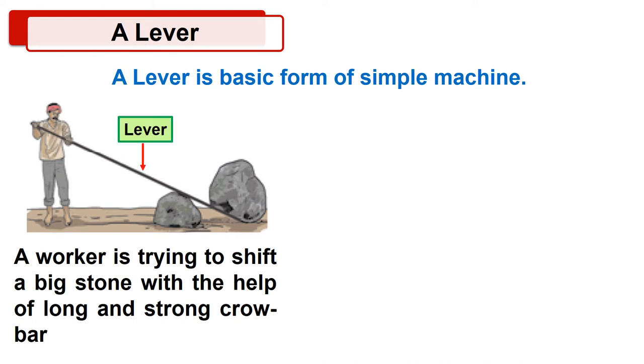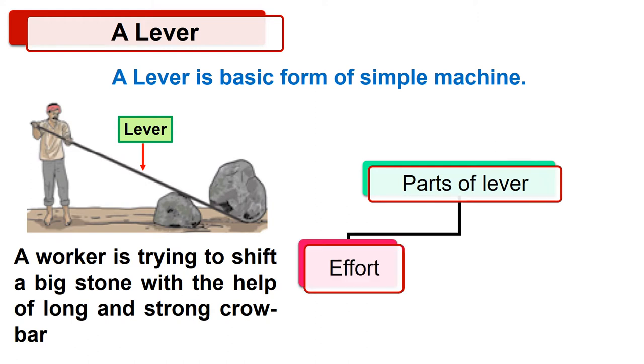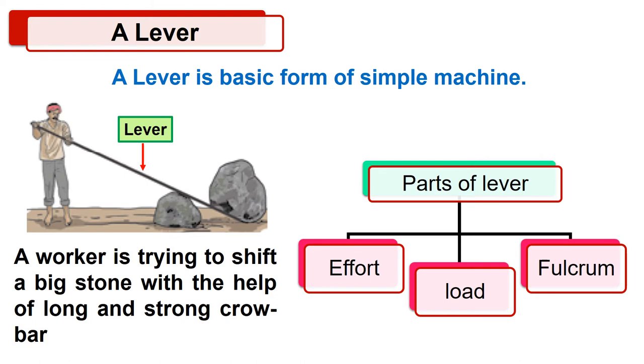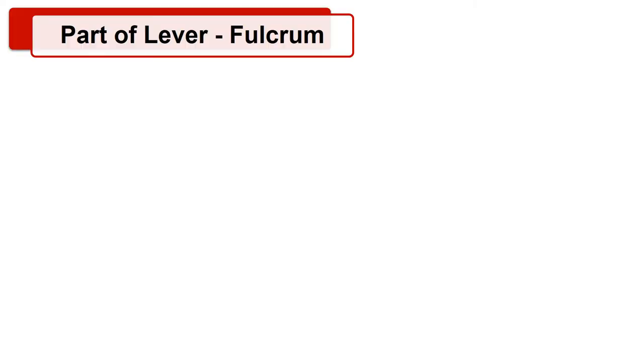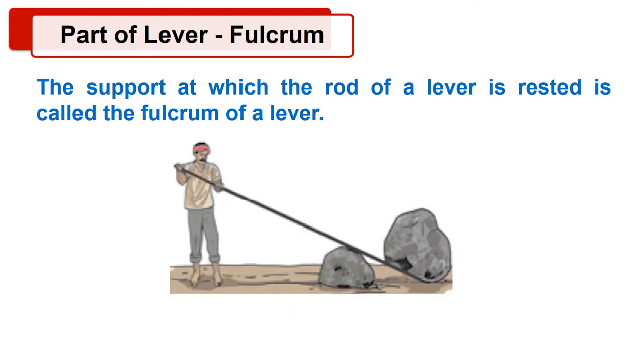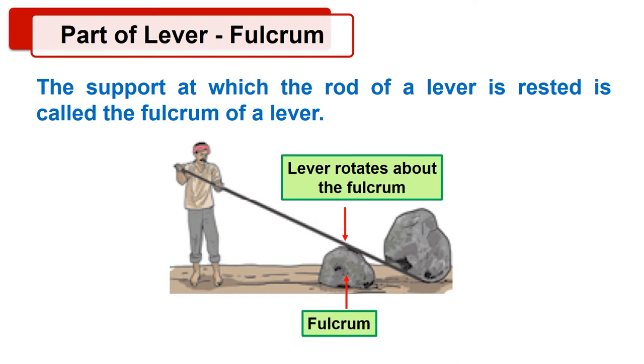A lever has three parts, namely effort, load, and fulcrum. The first part of a lever is fulcrum. The support at which the rod of a lever is rested is called a fulcrum of a lever. The lever rotates about the fulcrum.